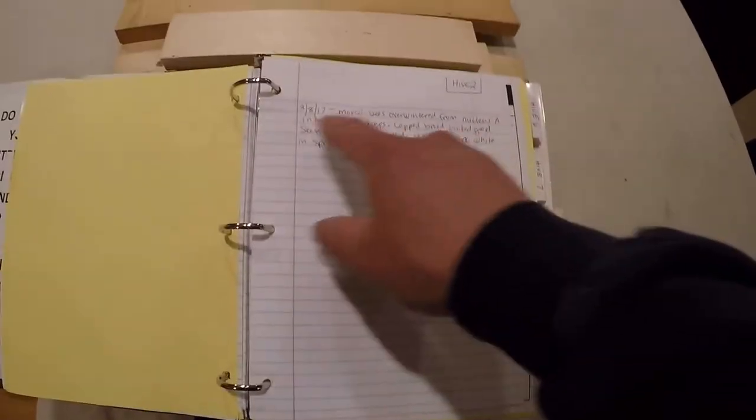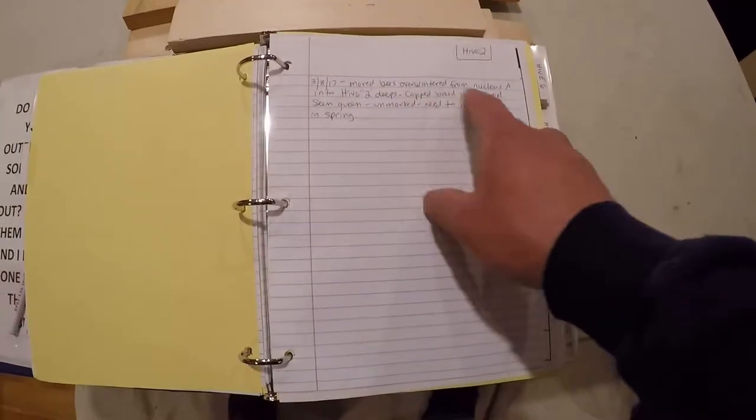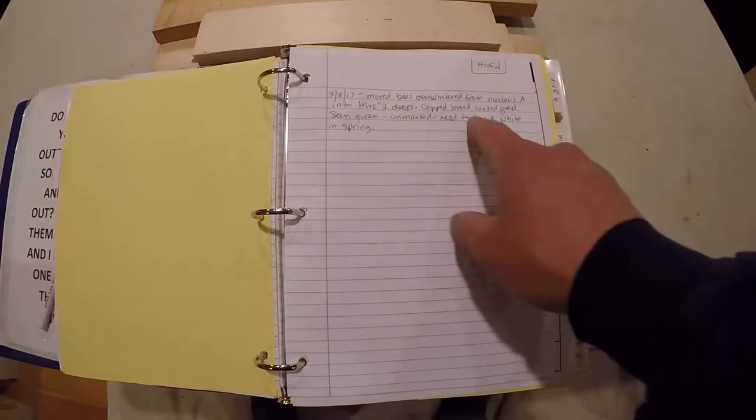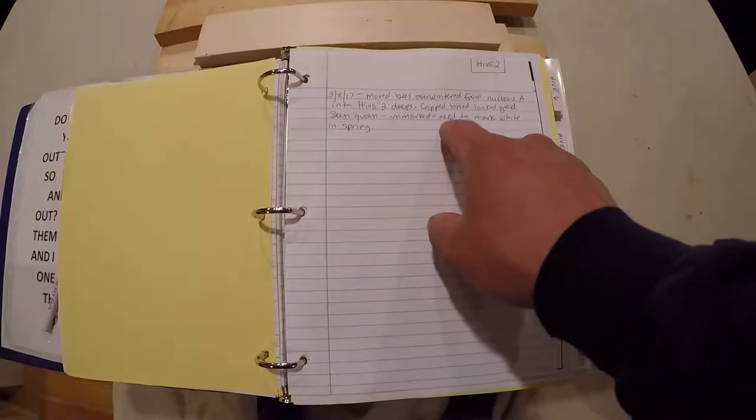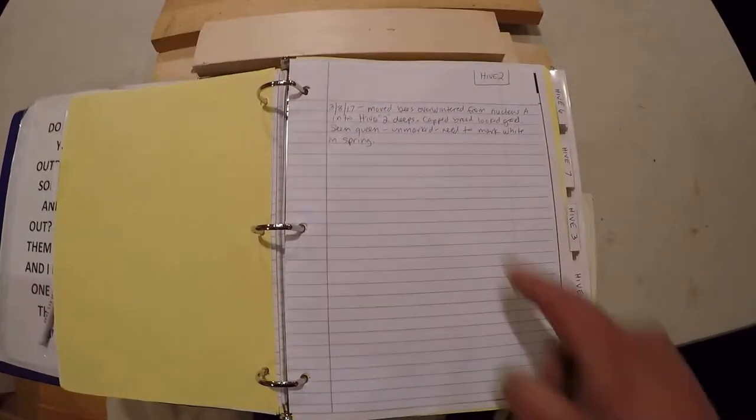Hive 2 was basically new information. Thrown on March 18th of 17. I moved the bees over winter from nucleus A from my double nuke into two hive deeps. Capped brood looked good. Seen queen. She was unmarked. I'll have to mark her with white in the spring here because she's the 2016 queen.